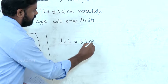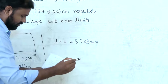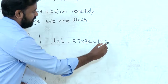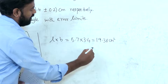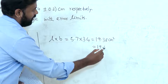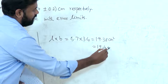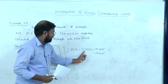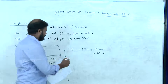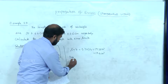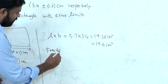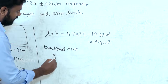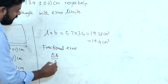5.7 into 3.4 is equal to 19.38 centimeter square. Now, rounding off gives 19.4 centimeter square. This decimal is equal to one value. Fractional error.